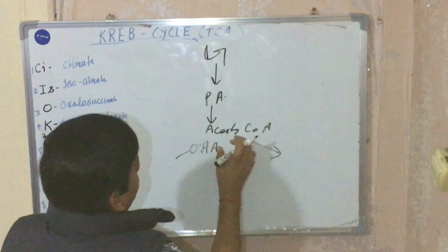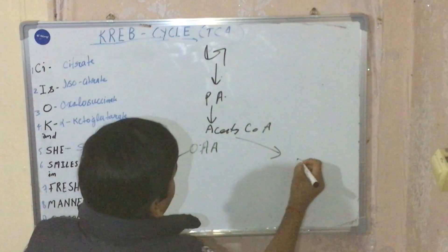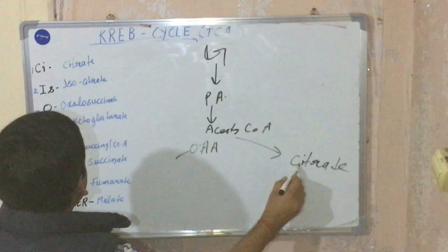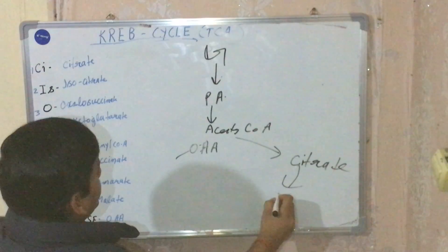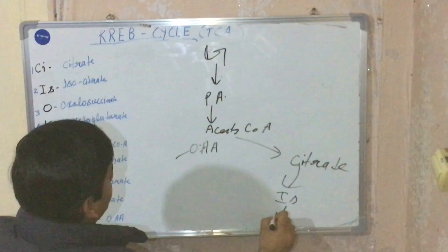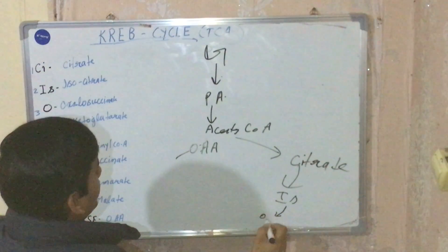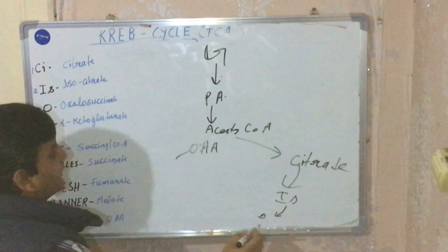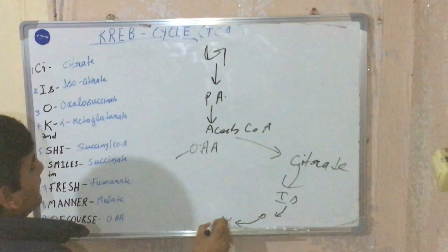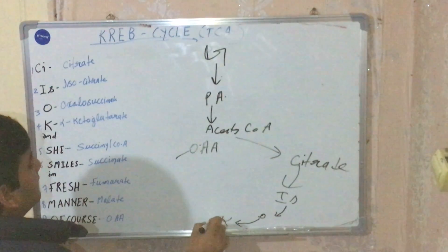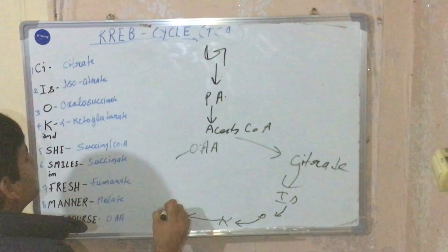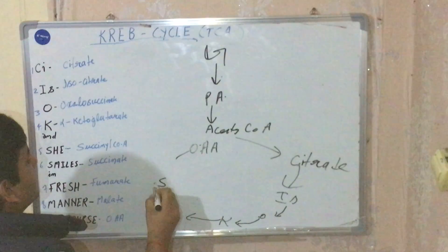In the Krebs cycle, oxaloacetic acid and acetyl coenzyme A combine to form citrate. This citrate is then converted into isocitrate, and isocitrate is further converted into oxalosuccinic acid. Oxalosuccinic acid is further converted into alpha-ketoglutarate, which is then converted into succinyl coenzyme A.